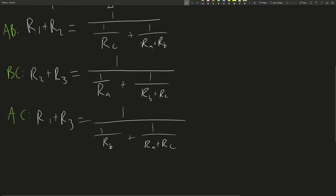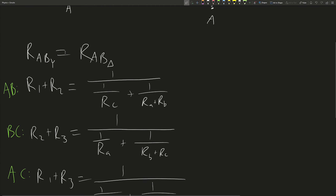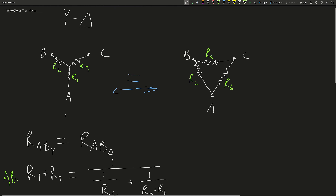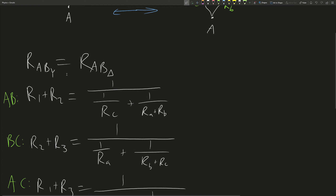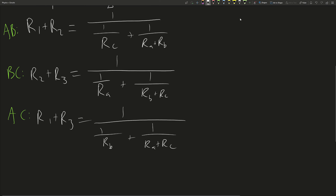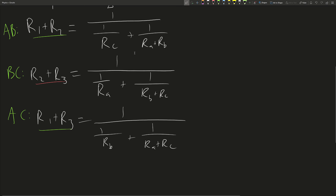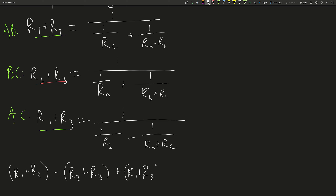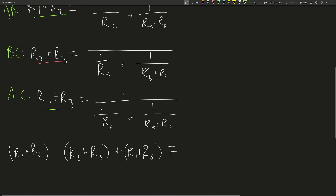Now, looking at this, we can solve first for R1, which will give us the equation for a resistor in the Y configuration. To solve for R1, we can do a trick where we add two of the equations and subtract the third. So we take R1 plus R2, minus (R2 plus R3), plus (R1 plus R3).